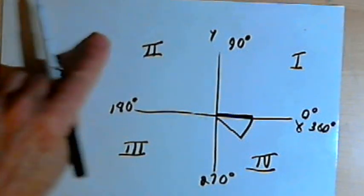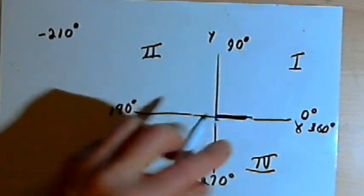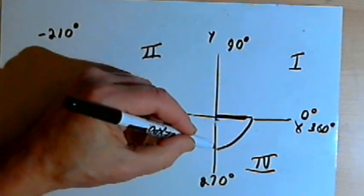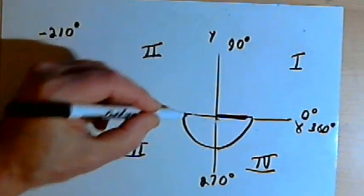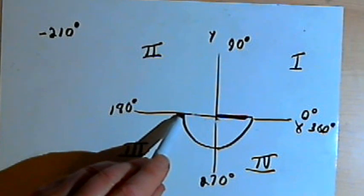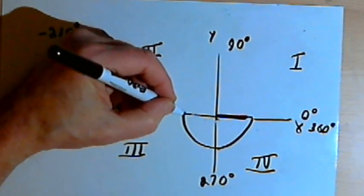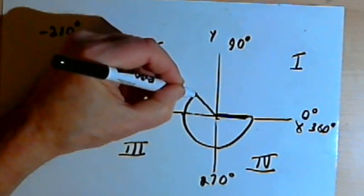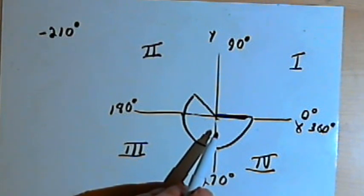Let's say we want a more negative angle — negative 210 degrees. We'll go negative 90, and negative 90 again, which takes us to negative 180. We need 30 more, so we're going to go negative 30 degrees further — we're in the second quadrant. That would be an angle of negative 210 degrees.